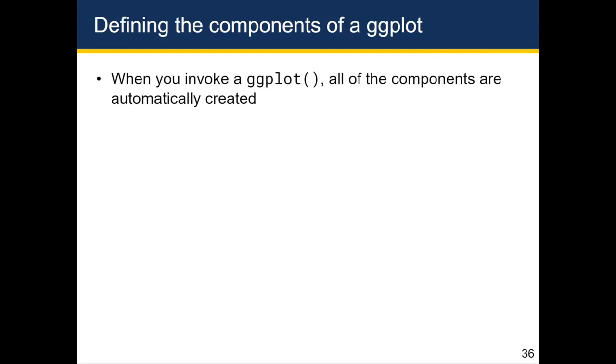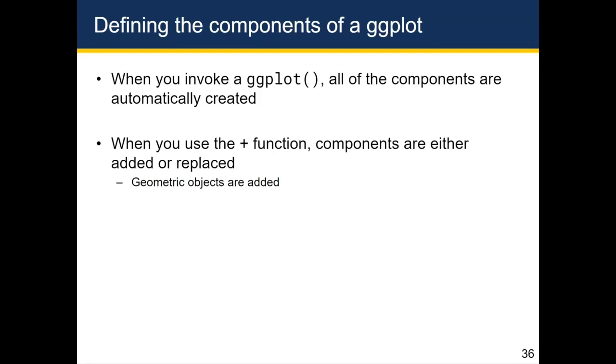So let's define the components of a ggplot in a bit more detail. When you invoke the ggplot function, all of the components of a ggplot are automatically created. So even though we said that a ggplot is a combination of all of those different components, you don't always have to add those components into a ggplot or to explicitly name those components. When you add the components together, the components are either added or they're replaced. And what I mean by that is, let's say you add a series of points to the screen, which is a type of geometric object. When you add on a geometric object of points, those points get added to the graph. However, let's say that you want to reverse the x-axis. So you add a scale that specifies a reversed scale for x-axis. This won't add that scale on top of the existing scale. It'll actually just replace the existing scale with a new scale.